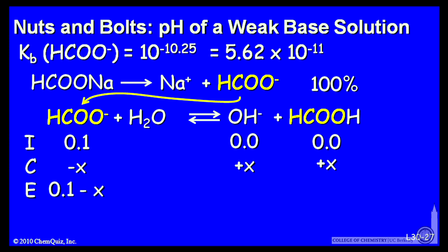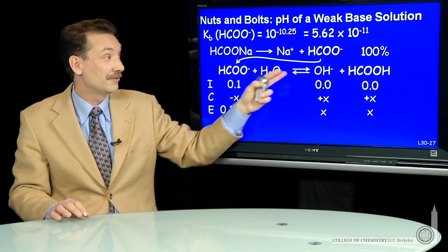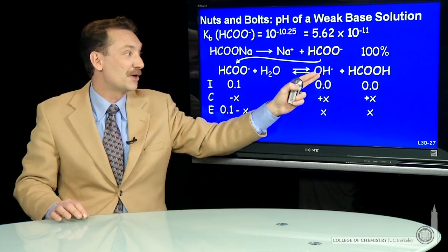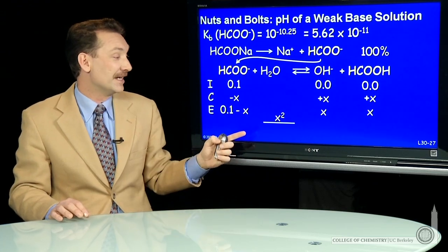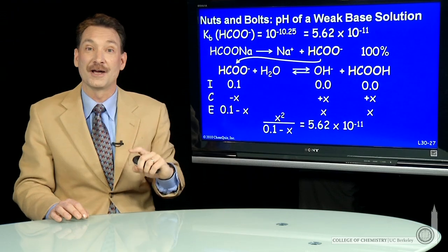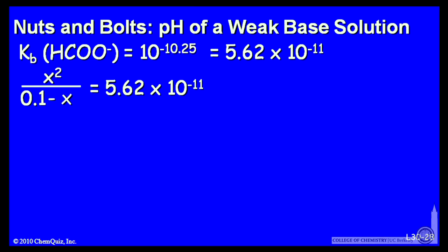I can plug these equilibrium values, 0.1 minus x, x and x, into the equilibrium expression for this reaction. The equilibrium expression will have the two products, x times x, x squared, over the reactants, 0.1 minus x, has to equal the equilibrium constant. And here I just solve for x. The easiest way to do that is, in this case, you see the equilibrium constant is small. If the equilibrium constant is small, x, which is the amount that dissociates, should be small. So I'll just assume that it is small with respect to 0.1. If it is, I can neglect x with respect to 0.1. That makes the math easy.